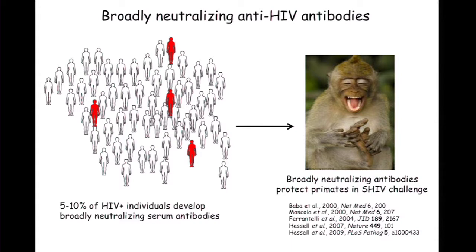There are these unusual people who for some reason make broadly neutralizing antibodies — antibodies that neutralize 90 to 95 percent of all viruses. These antibodies are really interesting because if you passively give them, by injecting pre-made antibodies, they will protect a non-human primate in an animal model of HIV infection. So if we could make a vaccine that would induce those antibodies, it would probably work. The problem is finding what you have to inject to elicit those antibodies.